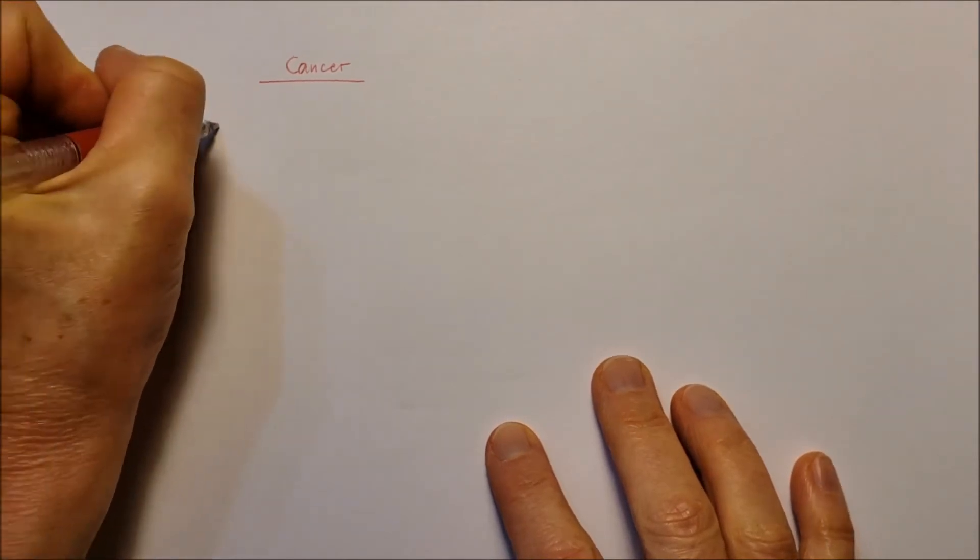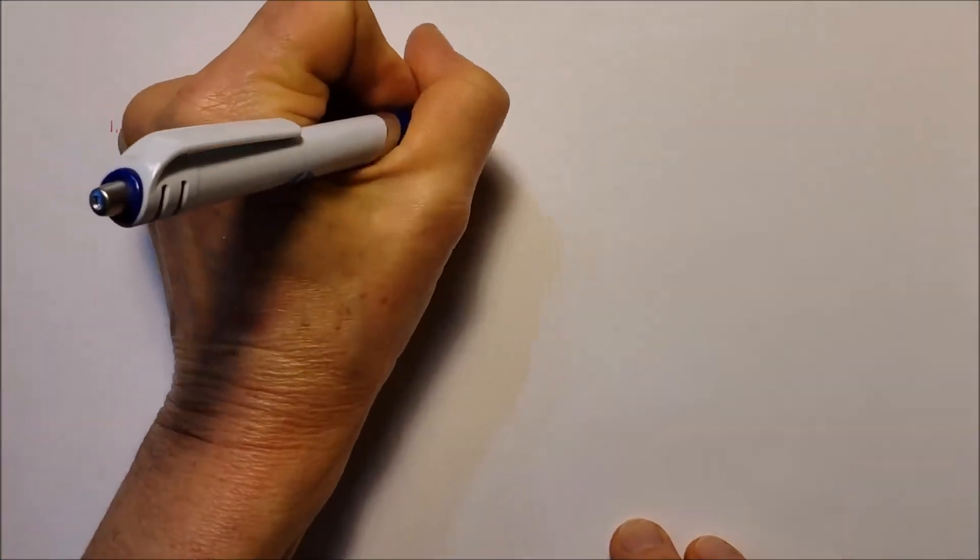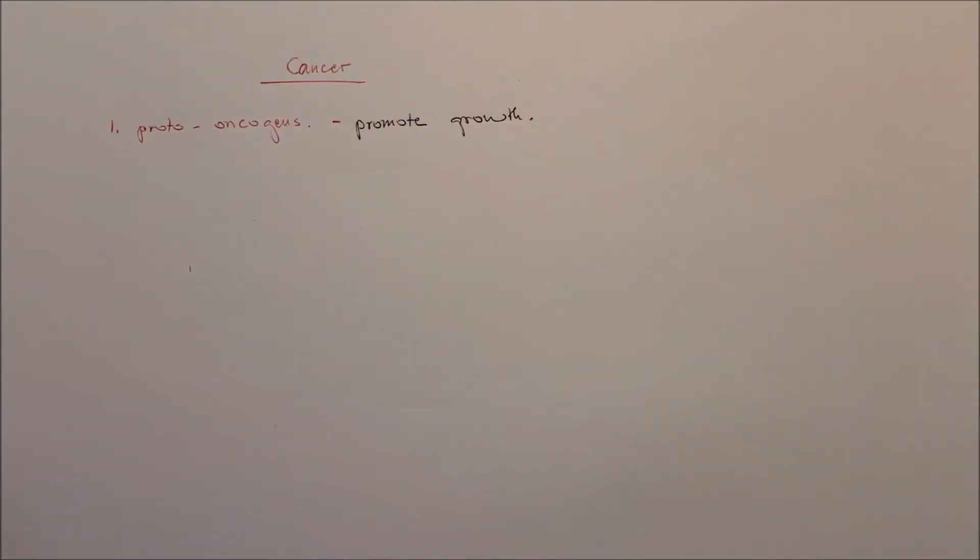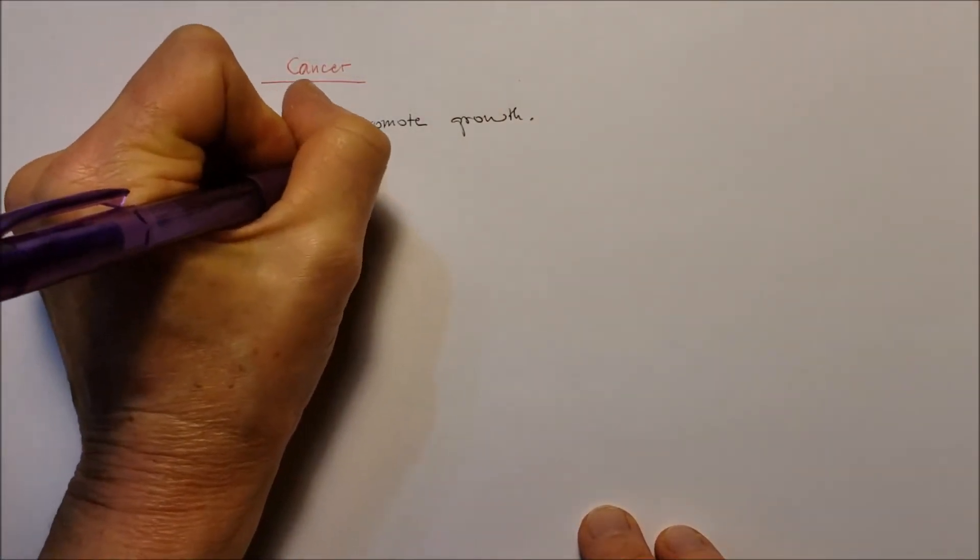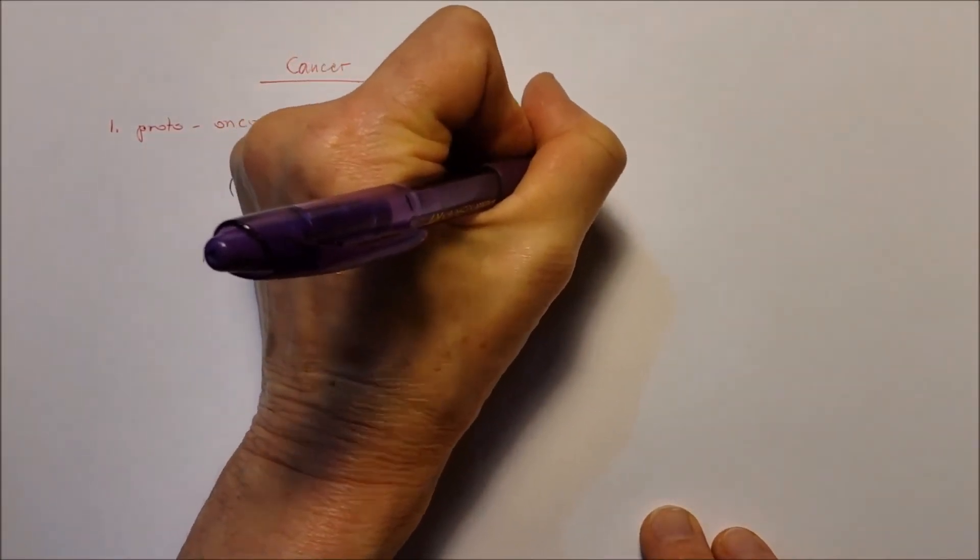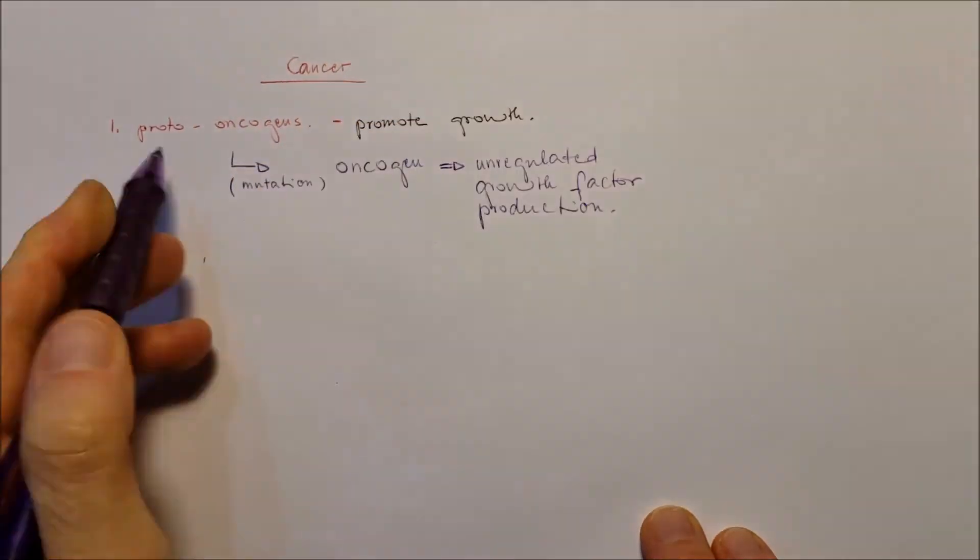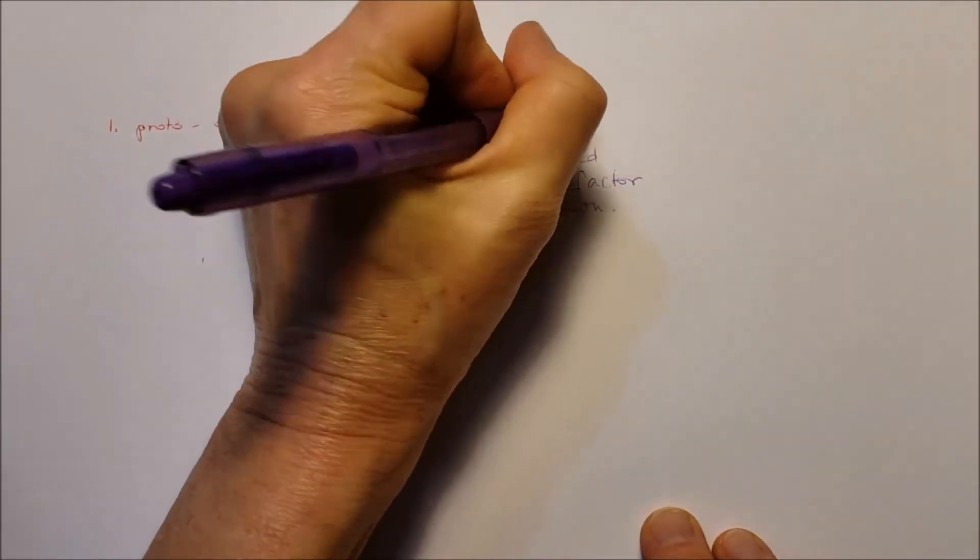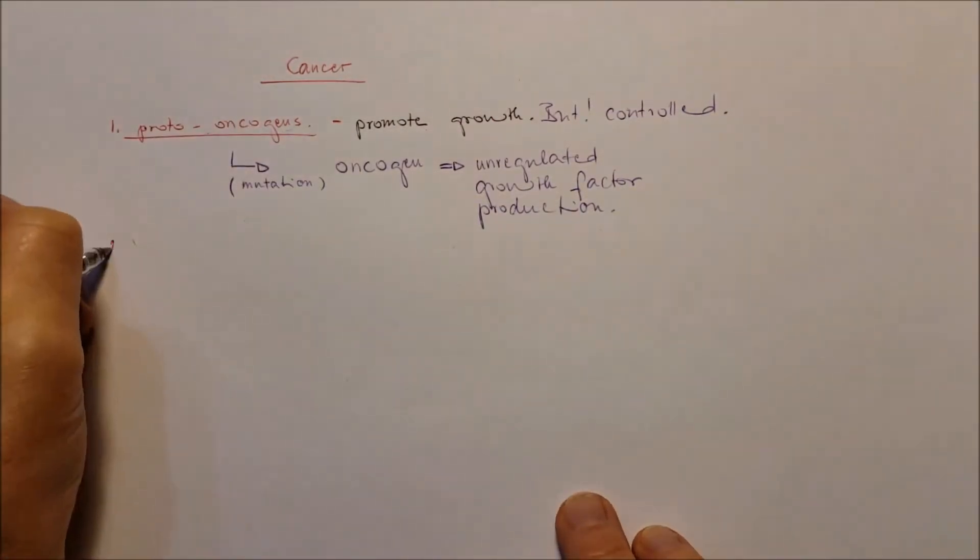The cancer formation. Very fast. We have in the DNA two types of genes. The proto-oncogenes. They promote cell growth in the cell cycle. If there's a mutation, oncogene will form. And this is going to cause an unregulated growth factor production, while the proto-oncogene is controlled growth factor production.